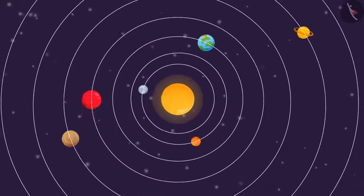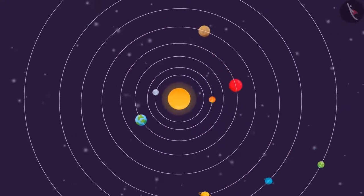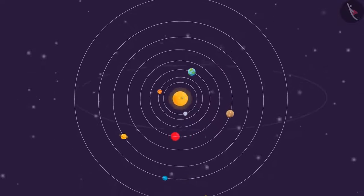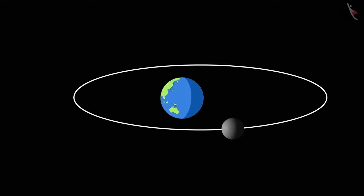In our galaxy, planets revolve around the sun in orbits. We also know that the moon goes around the earth.